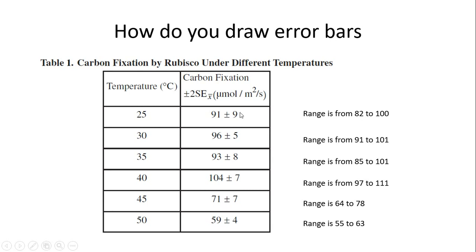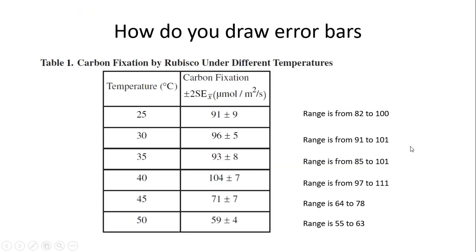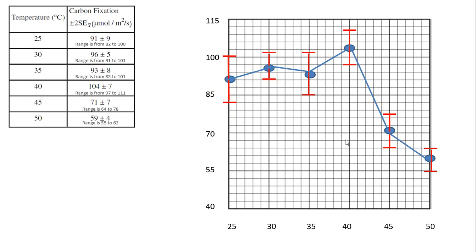So how do you draw error bars? First you plot your points as you do with any graph, and then you literally draw your lines looking for your top number and bottom number. For the first value at 25 degrees, 91 was our number and we have a range of plus 9 at the top of the bar to minus 9 at the bottom. For the next one with plus or minus 5, we draw plus 5 and minus 5 from our point — that gives you the range either way.